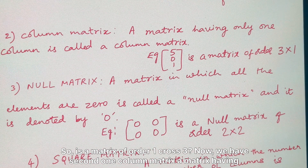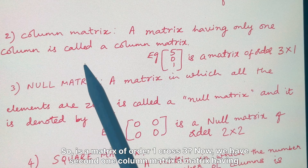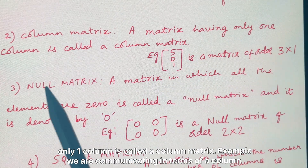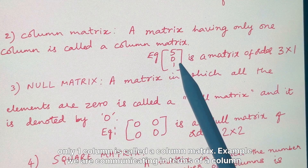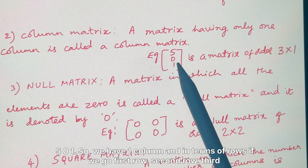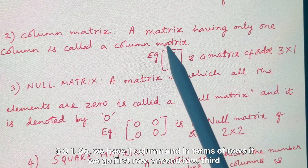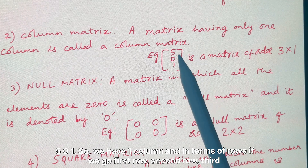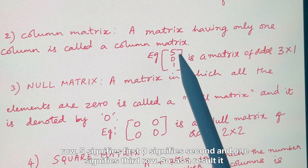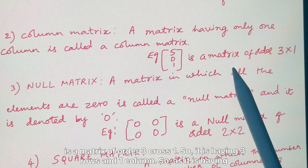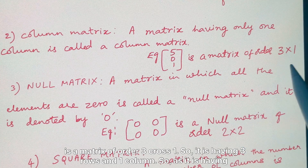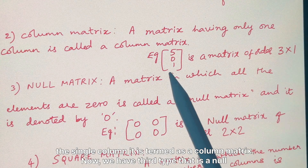The second type is a column matrix — a matrix having only one column is called a column matrix. For example, [5 / 0 / 1] has one column and three rows, where 5 is the first row, 0 is the second, and 1 is the third. So it is a matrix of order 3 cross 1.